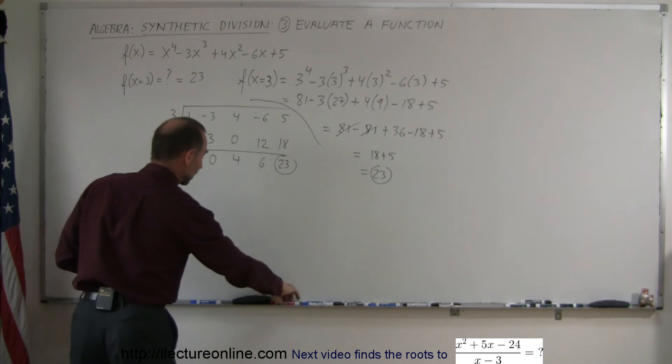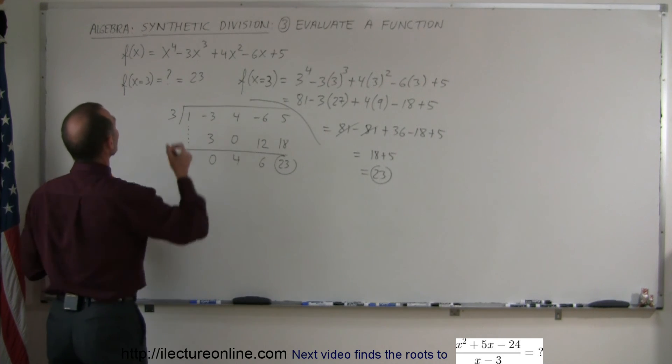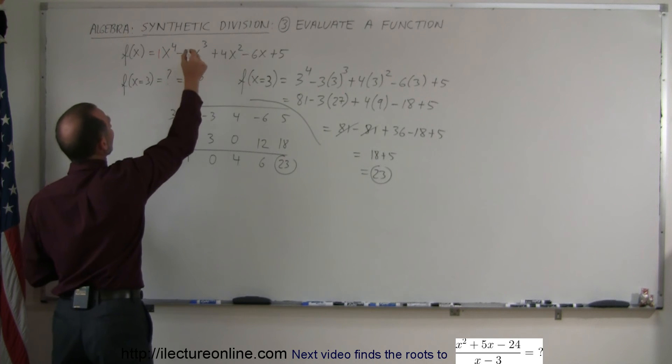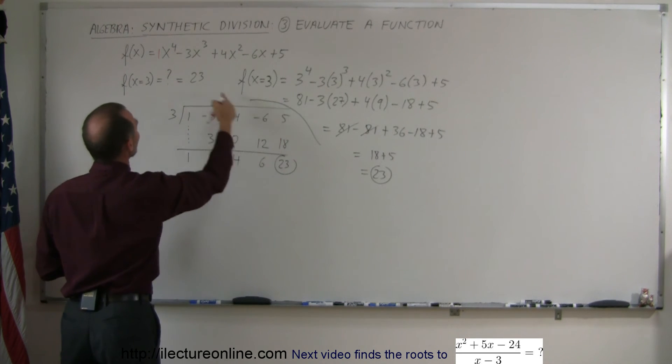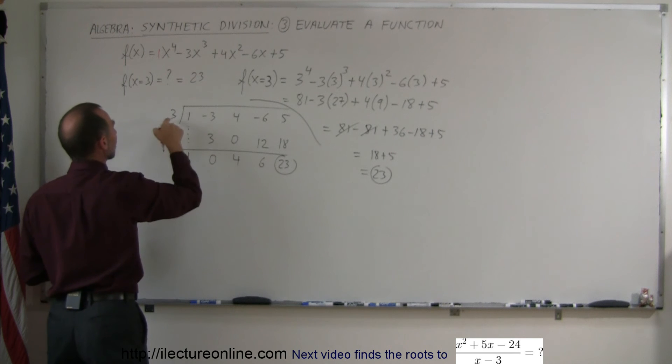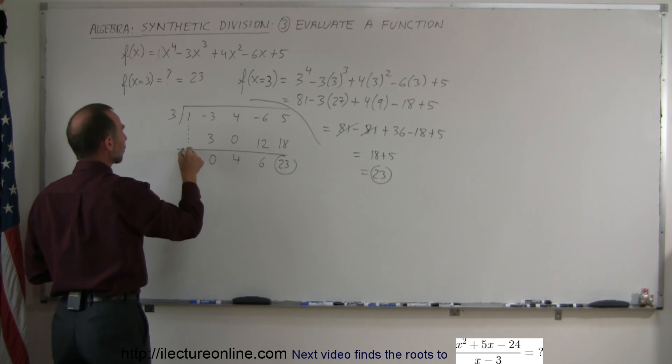And just so you can see how that works again: you put down the coefficients, 1, negative 3, 4, negative 6, and 5. Put them in here. The number you're evaluating at goes right here. You drop the first number down.